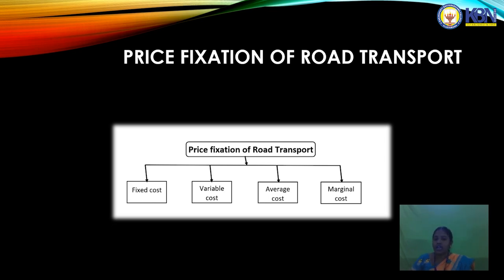Average cost is the difference between fixed cost and variable cost. The formula is: fixed cost plus variable cost divided by 2 — that is called average cost.